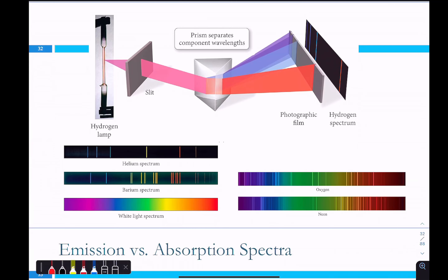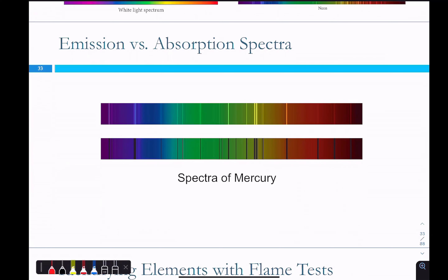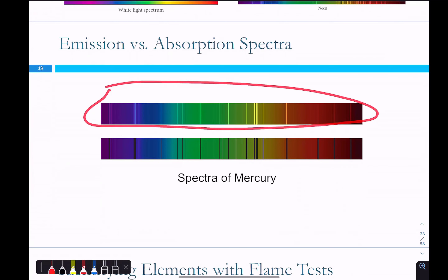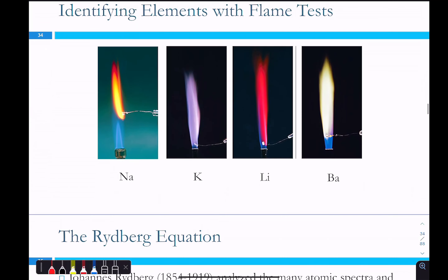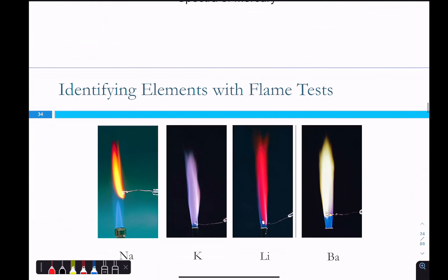Here are different spectra separated with a prism. The emission spectrum of mercury versus the absorption spectrum — the absorption has black bars where the bright bars should be. You can also do this with flame tests; different elements burn different colors. In each case it's a different way of adding energy — heat for flame tests, electricity for the lamps — but in both cases we're exciting electrons up into higher energy states.